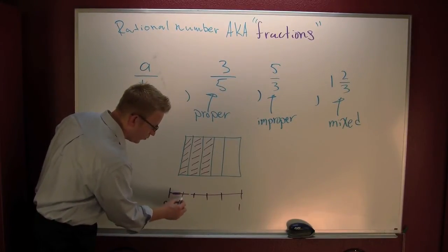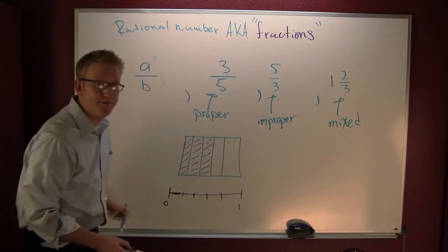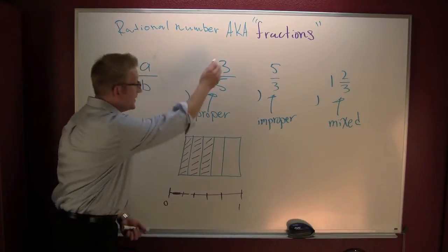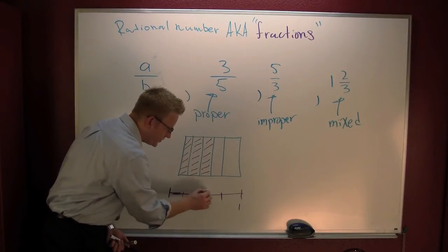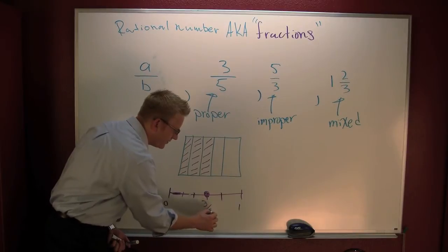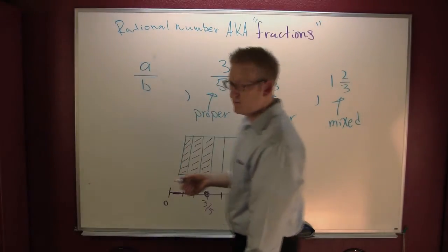Here's where it starts. This is 1 fifth. That's 2 fifths, 3 fifths, 4 fifths, 5 fifths or 1. This number on a number line would be right here. This is 1, 2, 3 fifths. Yeah. It's kind of like a ruler.